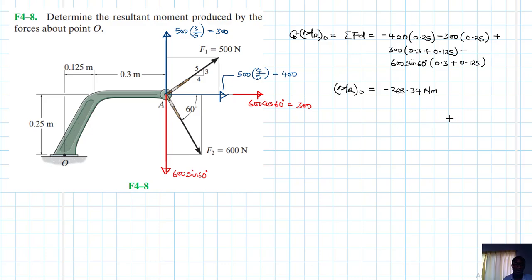Okay, minus 268.34. So this is negative. It means it's clockwise, so we can write it like this: 268.34 newton meters, and this is clockwise.